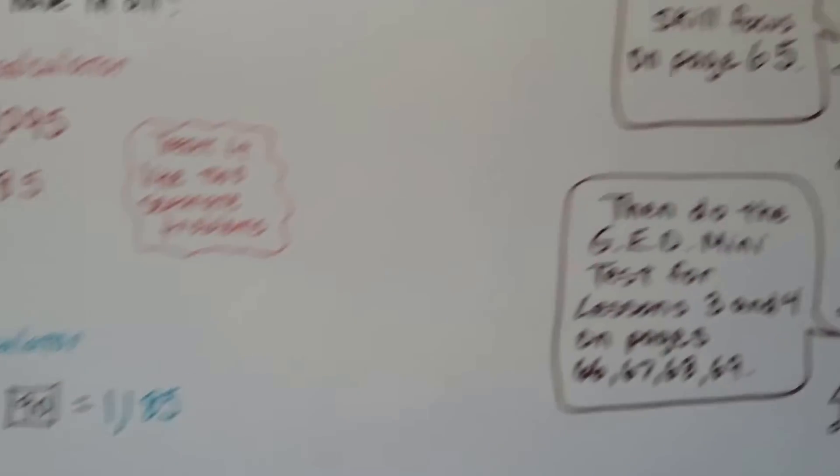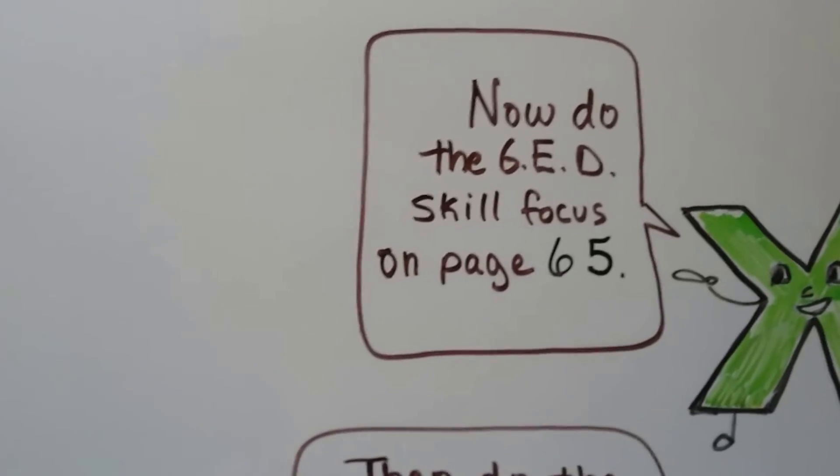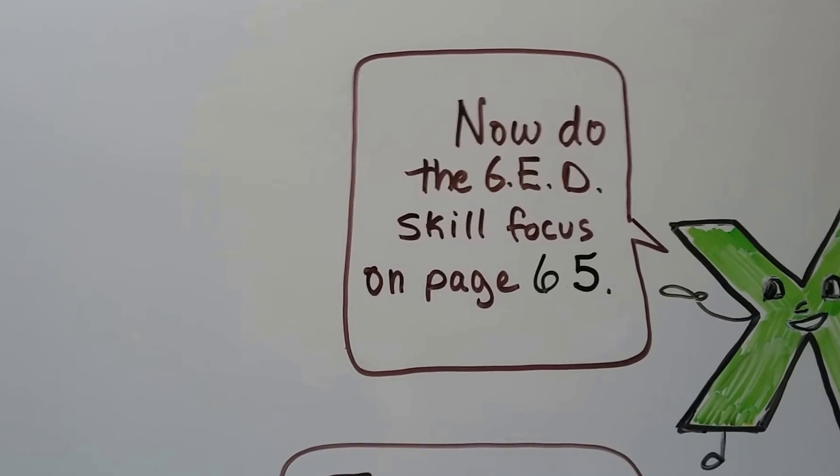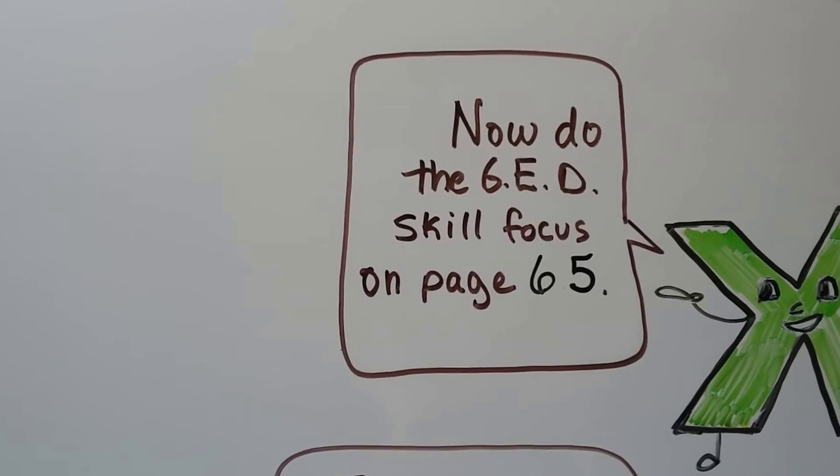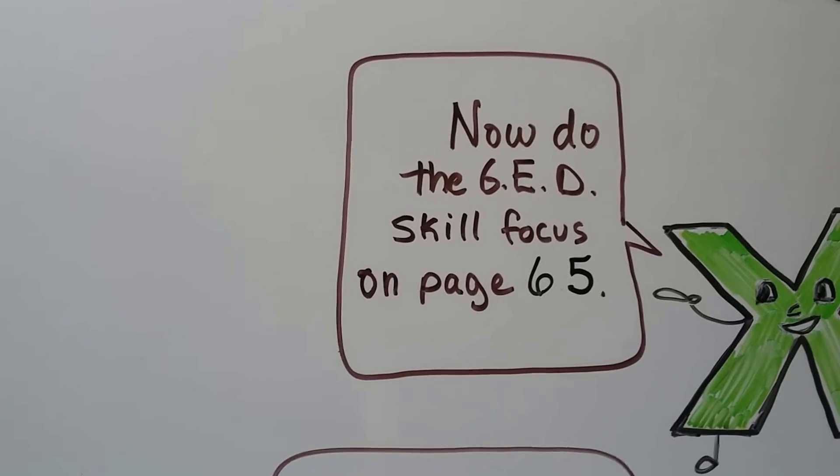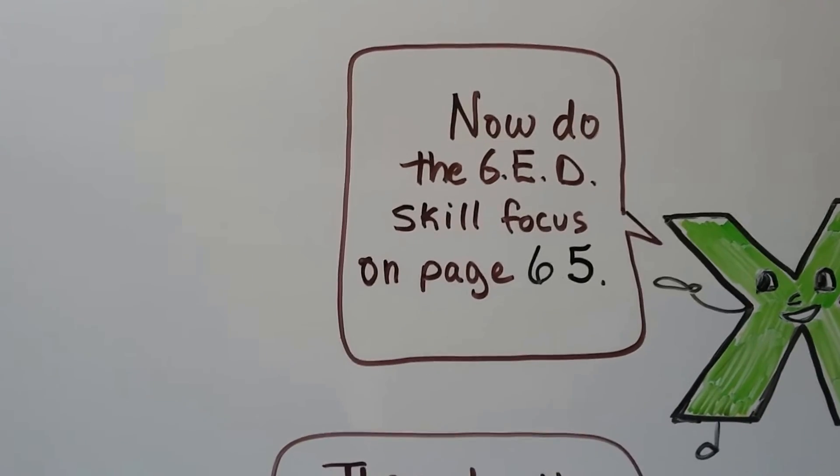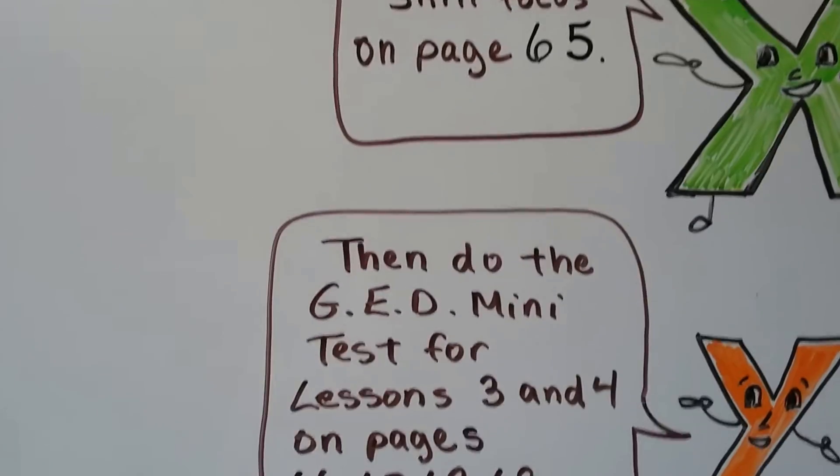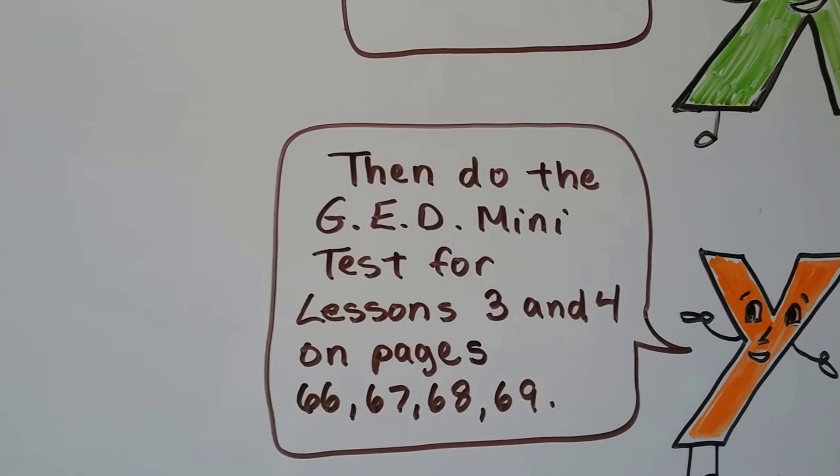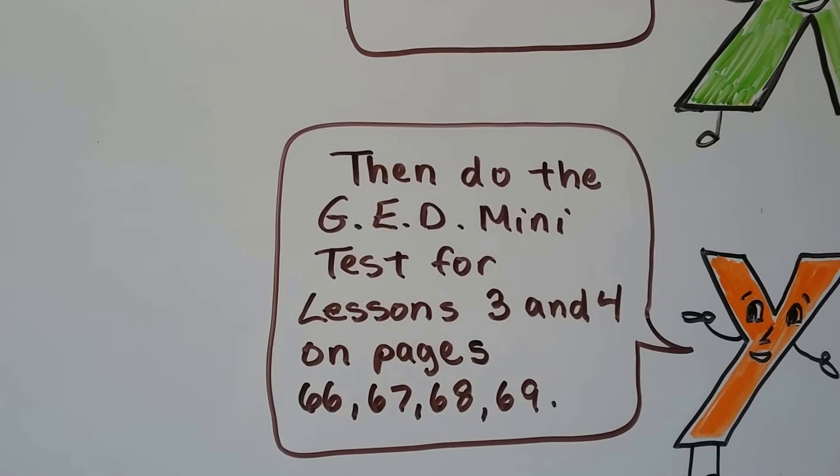So now you should be ready to do the skill focus on page 65. If you have any problems, click the description in this video and go back and figure out what you missed, where you got confused, so you can fill in any holes before you go on to the next lesson. You should be then ready to do the GED mini test for lessons 3 and 4 on pages 66, 67, 68, and 69.